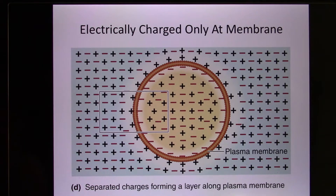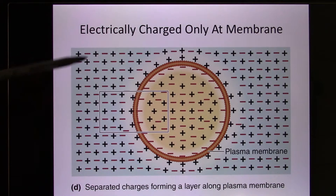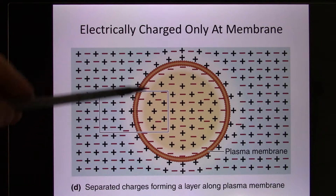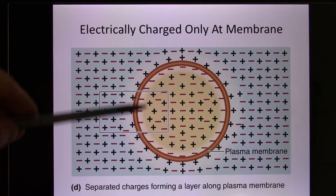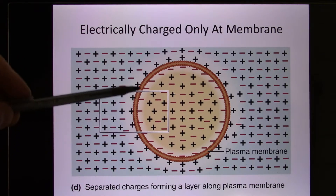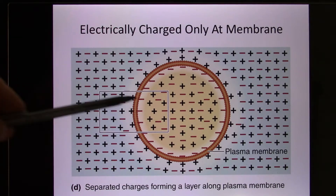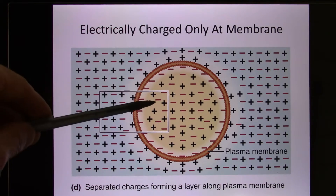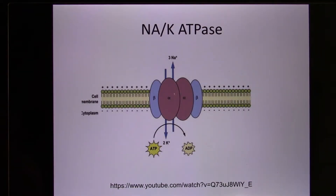In cells, it actually looks like this. You have a lot of ions inside and outside. We select a specific part of the membrane to look at. Inside is more negative compared with outside, so the inside is about minus 70 millivolt.